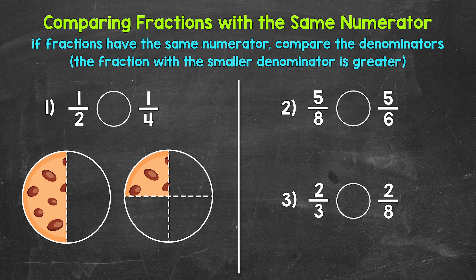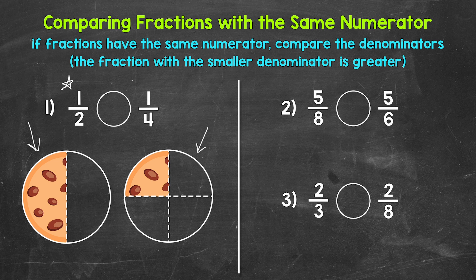Looking at number one, we have two big chocolate chip cookies here to help us out. Both cookies were the same size to start — we are looking at what fraction of each cookie is left. The cookie on the left was divided into two equal parts, and one out of the two parts is left, so our fraction is 1 half. The cookie on the right was divided into four equal parts, and one out of the four parts is left, so our fraction is 1 fourth. Just by looking at the cookies, we can see that 1 half is greater than 1 fourth — there is more of the cookie left for 1 half than there is for 1 fourth.